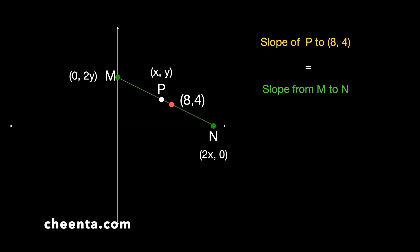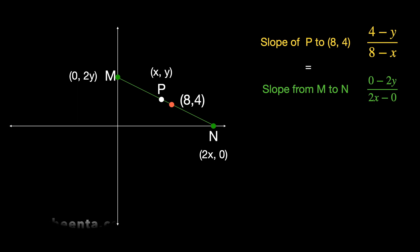The slope from P to (8, 4) is (4 − Y) / (8 − X), and the slope of MN is (0 − 2Y) / (2X − 0). Whatever the position of MN, as long as it passes through (8, 4), the slope from P to (8, 4) must equal the slope from M to N. This is the key trick.